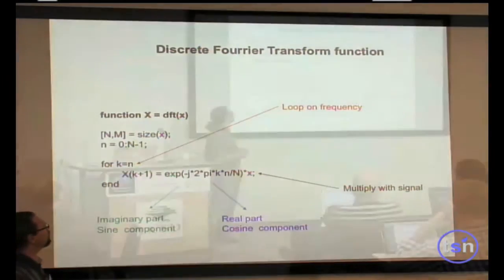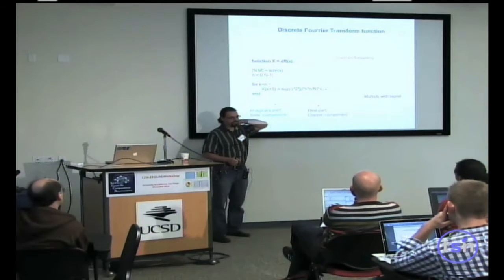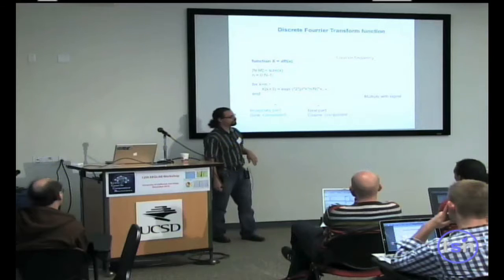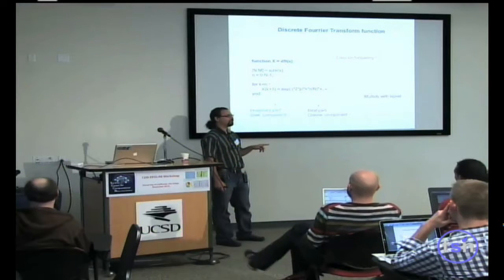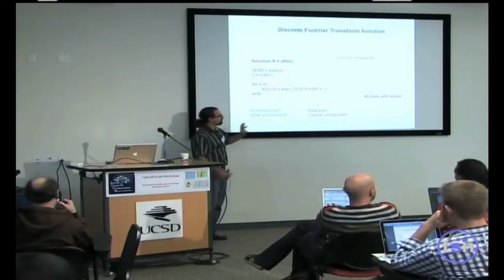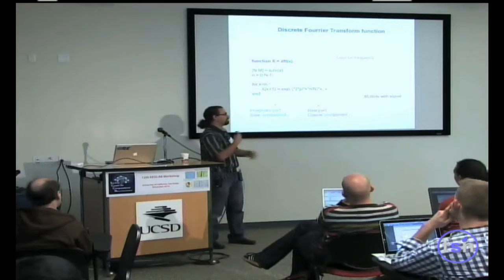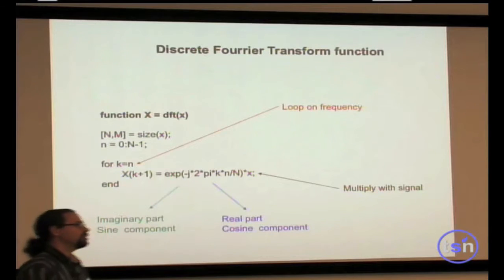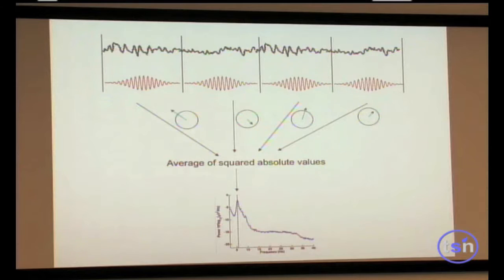The numerical difference between the discrete Fourier transform and the fast Fourier transform is simply that the FFT is faster. The FFT algorithm is more complex because it exploits harmonics between frequencies, so it doesn't recompute everything from scratch. The DFT computes every single frequency one by one, whereas in the FFT, the amplitude at 4 Hz shares information with the amplitude at 8 Hz, and so on.